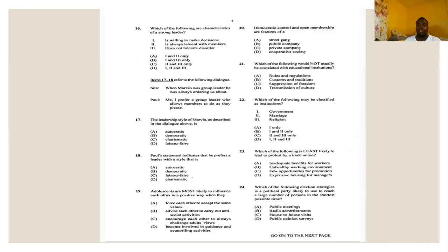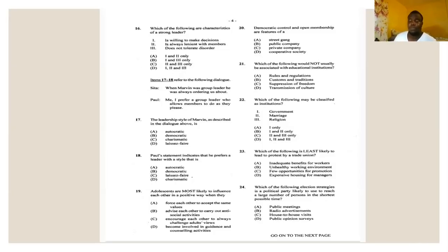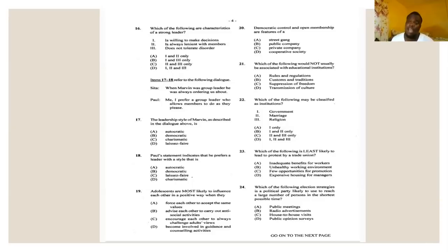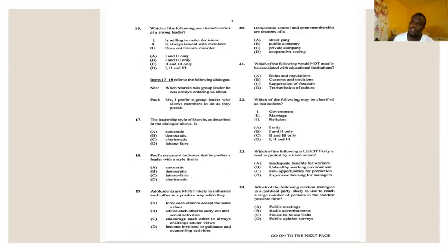Number twenty says: democratic control and open membership are features of — A: a street gang, B: public company, C: private company, or D: cooperative society. No company has open membership — there are requirements for employees, partners, or shareholders. A street gang doesn't have democratic control or open membership — gangs are usually under autocratic control. The only possible answer left is D — cooperative society. Do some research to find out what a cooperative society is.